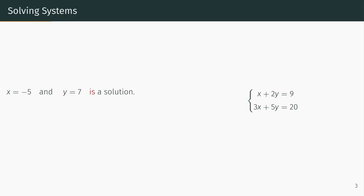this system of equations has a solution of x equals minus 5 and y equals 7. If we plug in x equals minus 5, and then we plug in y equals 7, we see that both equations are satisfied simultaneously.